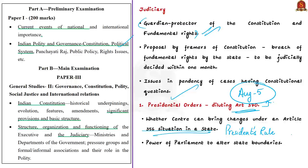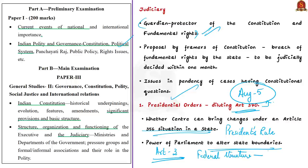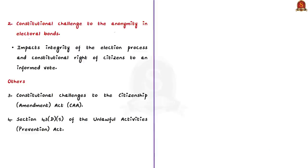Another constitutional question is the power of Parliament to alter state boundaries under Article 3 — specifically, whether Parliament has the power to degrade a state into a Union Territory. This action amounts to a huge power shift to the Center, and to maintain the federal structure, which is a basic structure of the Constitution, Indian courts should look into this matter as soon as possible. The second example is the constitutional challenge to Electoral Bonds, which has been pending for almost four years.